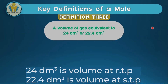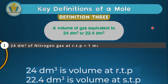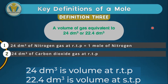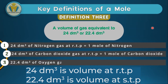Let's see how this definition can be applied. If we get 24 cubic decimeters of nitrogen gas at room temperature and pressure, we can confidently say we have one mole of nitrogen. Again, if we get 24 cubic decimeters of carbon dioxide at room temperature and pressure, we can say we've collected one mole of carbon dioxide. If we get 22.4 cubic decimeters of oxygen gas at standard temperature and pressure, we have one mole of oxygen. You should be able to relate the 24 cubic decimeters with room temperature and pressure, and the 22.4 cubic decimeters with standard temperature and pressure.